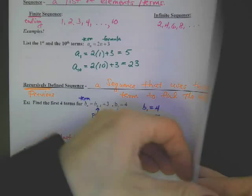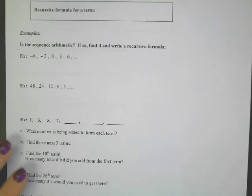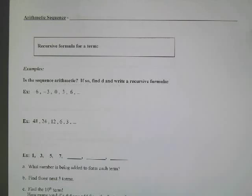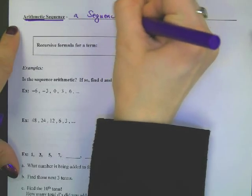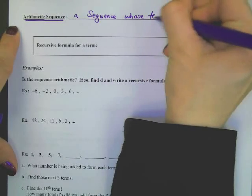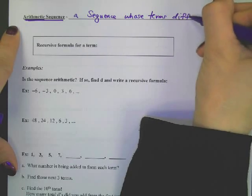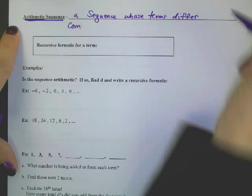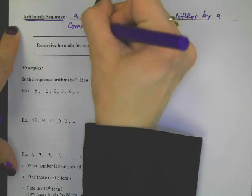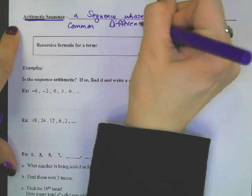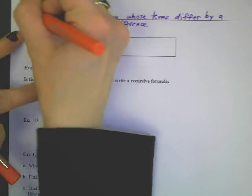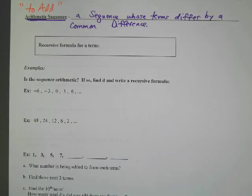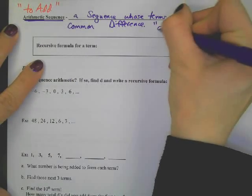Now that you know what notation looks like, it's time to start talking arithmetic. You're going to be hearing two words a lot in this chapter: arithmetic and geometric. An arithmetic sequence is a sequence whose terms differ by a common difference. Arithmetic means to add — you're going to add something, add something, add something. There's a common difference, and we call that common difference D.